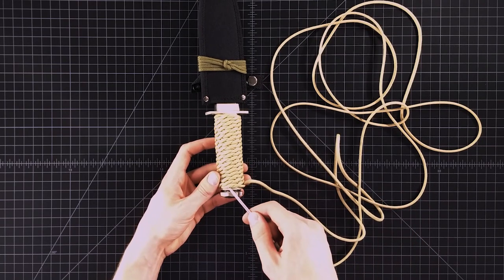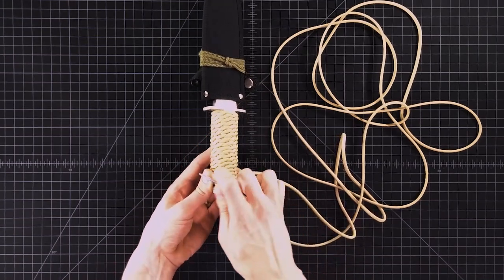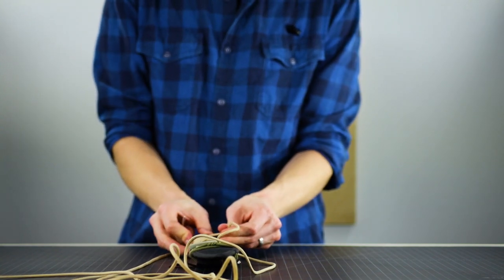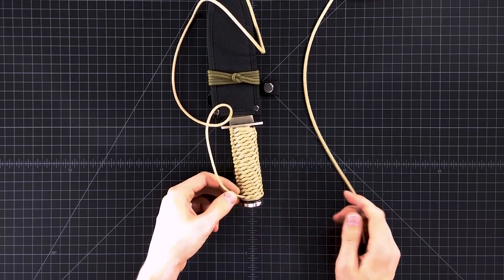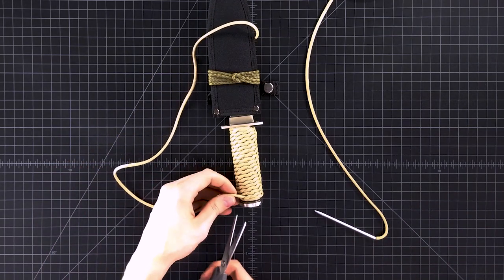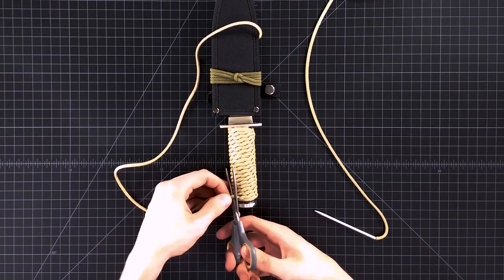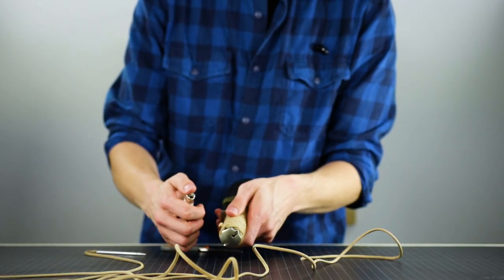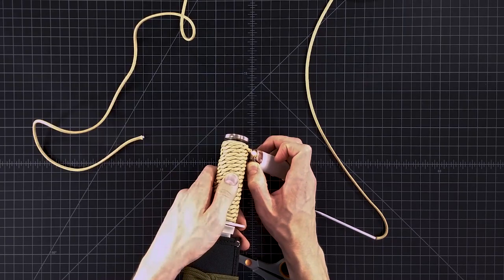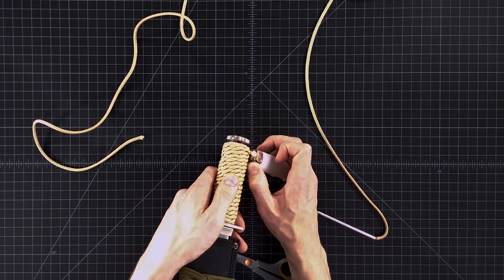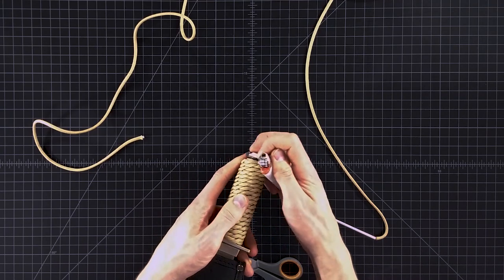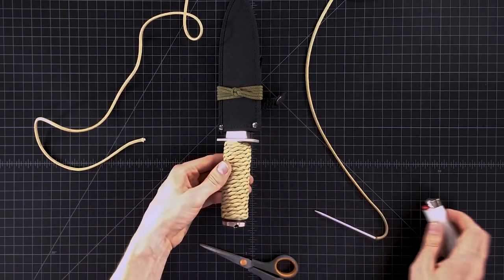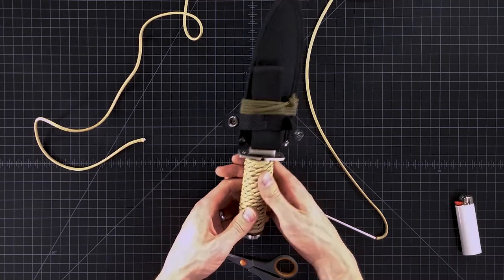To finish it off, I'm just going to do one more loop. So stick it through. And now right here where it sticks out, I'm just going to cut it about a quarter inch from there. And then I'll melt that. Push that flat up against the handle. And that is done.